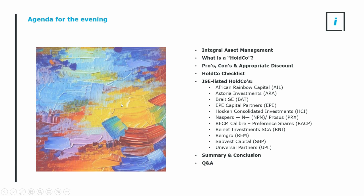Jumping away from arts criticism into what we're going to talk about tonight: first I want to introduce Integral Asset Management — that is a holdco. We'll cover pros and cons, and when I talk about an appropriate discount, what is my methodology? Because we're talking about 12 different holdcos, and each of those holdcos have underlying companies, there's a vast amount of material to go through tonight. How do we condense this into 40 to 45 minutes of a presentation, leaving time for questions? I use checklists.